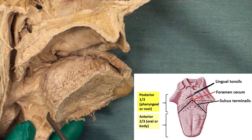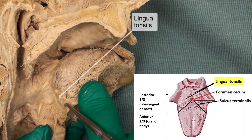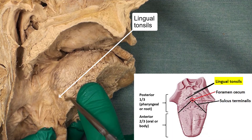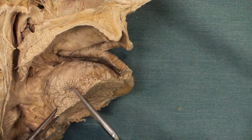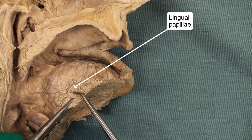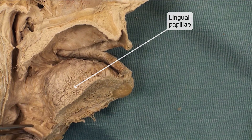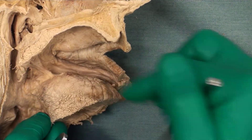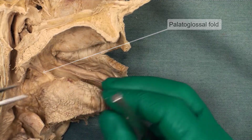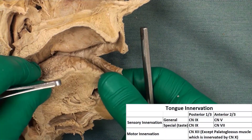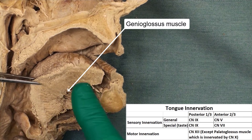On the posterior one-third of the tongue on the dorsal aspect we have an aggregation of lymphatic follicles known as the lingual tonsils. On the anterior two-thirds of the tongue we have the papillae, which come in different forms on this aspect. On the sides we have the palatoglossal folds that attach the tongue to the soft palate. The bulk of the tongue is mostly made by intrinsic tongue muscles — this one here is the genioglossus muscle.